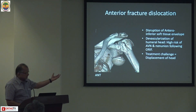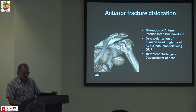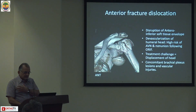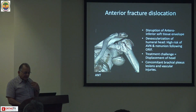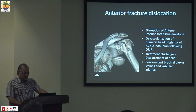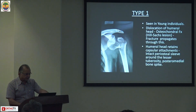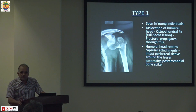The treatment is a challenge because the head fragment is just underneath your musculo-neurovascular structures, and sometimes it migrates medially, making it very difficult to pull back into the glenoid. There can be concomitant brachial plexus lesions and vascular injuries depending on where the head has migrated medially. There are two types of anterior fracture dislocation: Type 1 and Type 2.